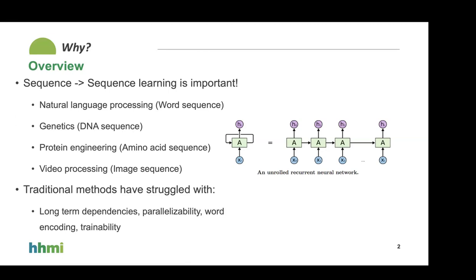A lot of these sequence-to-sequence tasks have issues with long-term dependencies. Usually when you have something like a Markov model, you have a state and a next state, and the only information you have is from your state one previous. But in language, words that are 10 words away can be directly modifying each other. Recurrent neural networks, the previous state of the art, have one state that feeds forward through time — but this is hard to train in parallel because every state depends on the previous state, so it must be trained in series, which can be quite slow.